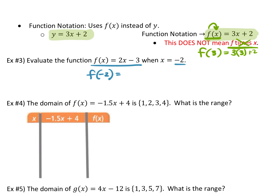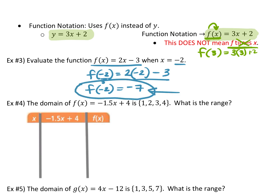Let's plug it in. You have 2 times negative 2 minus 3. So F of negative 2 — when I plug in negative 2 I get negative 7. 2 times negative 2 is negative 4. Negative 4 minus 3 is negative 7. When I plug in negative 2 for X, I get negative 7 as my Y. Whenever you see F of x, it's essentially Y. So F of negative 2 means when I plug negative 2 in for X, I get negative 7 for Y.